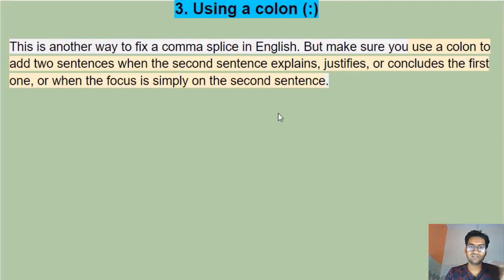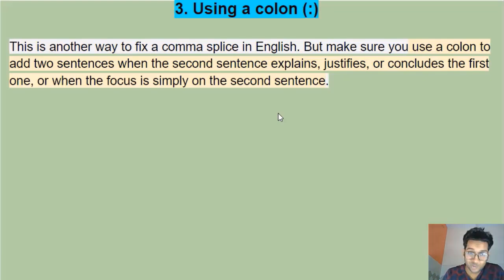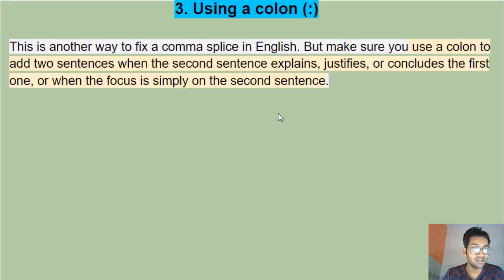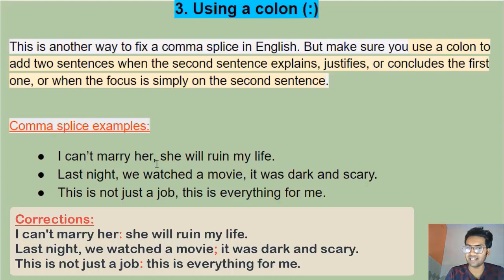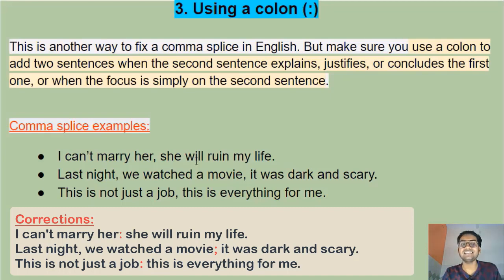The third way is using a colon. You need to be careful here — only use a colon when the second sentence summarizes, concludes, or justifies the first one, or when the focus is on the second sentence. For example: 'I cannot marry her: she will ruin my life.' The second part justifies and gives the reason for the first.